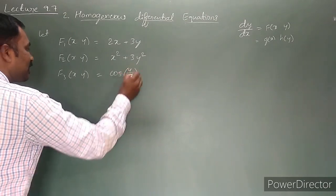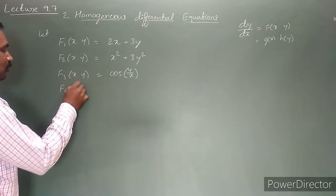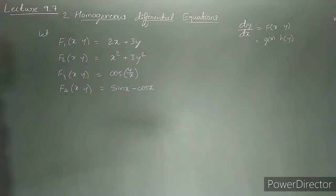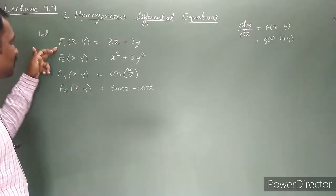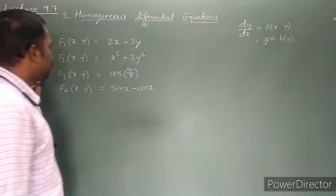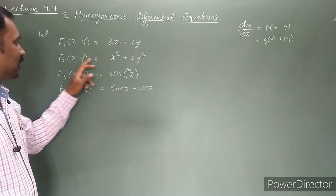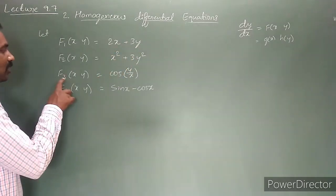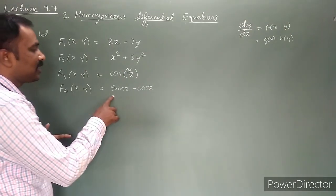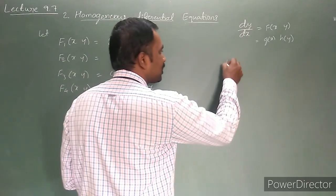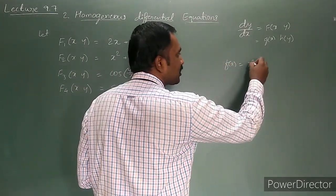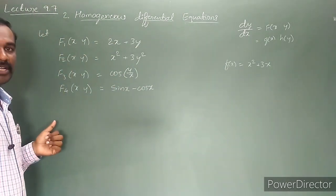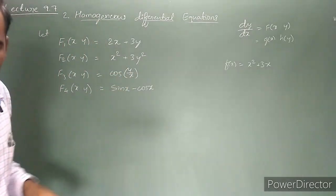Also consider f3(x, y) = cos(y/x), and f4(x, y) = sin(x) − cos(x). I particularly consider these core functions. Note that f1, f2, f3 have both variables x and y, while f4(x) has only one variable.